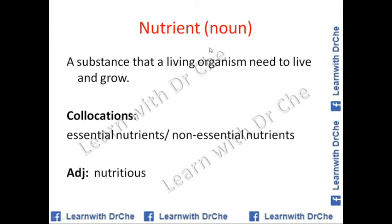Nutrient is a noun. It means a substance that a living organism needs to live and grow. Collocations include essential nutrients — those that are important and obligatory for our growth — and non-essential nutrients, which are not critical but can be produced within the body. Don't be confused by these medical terms; simply remember essential means important and non-essential means not as important.